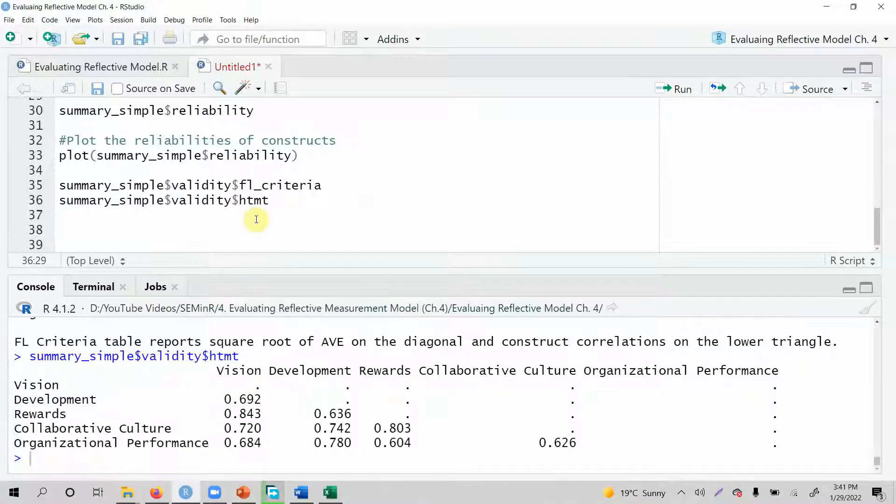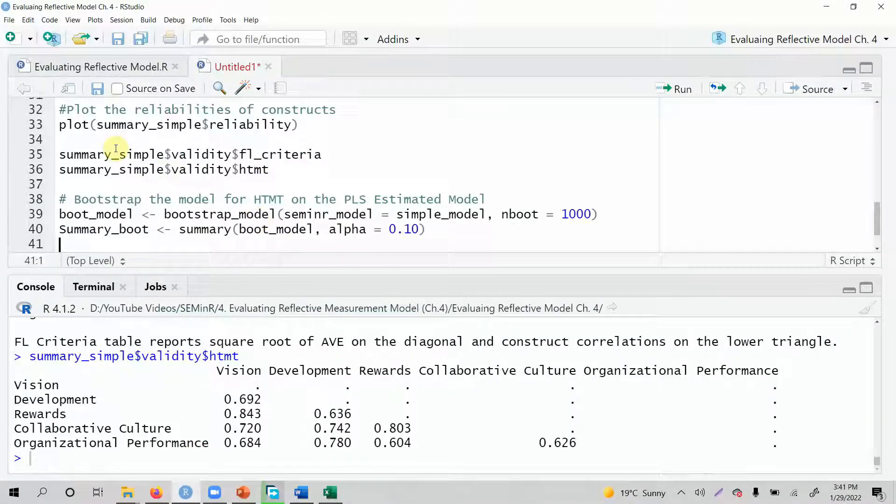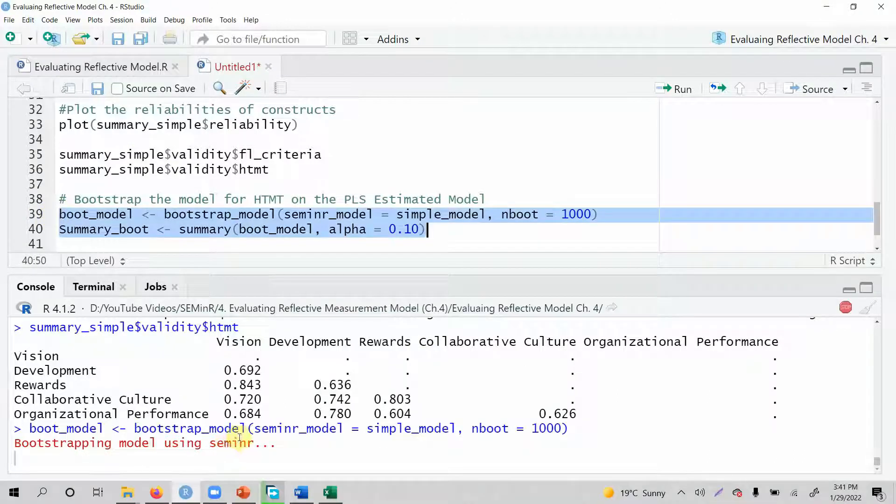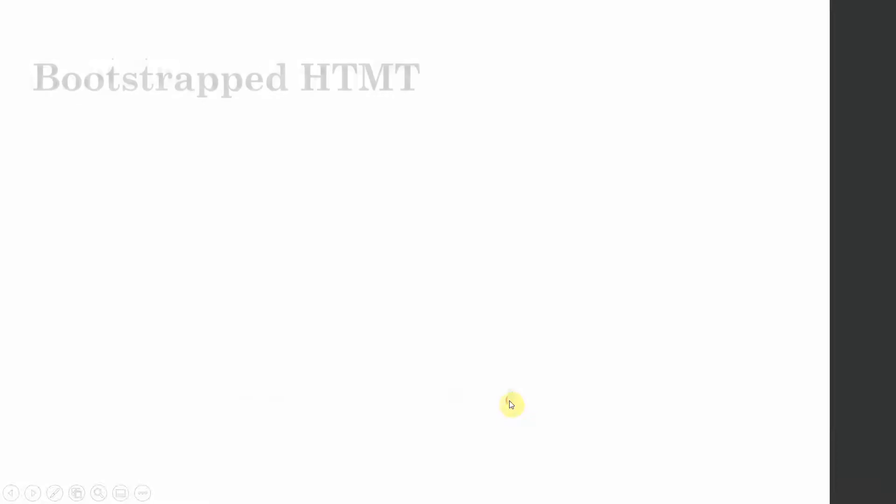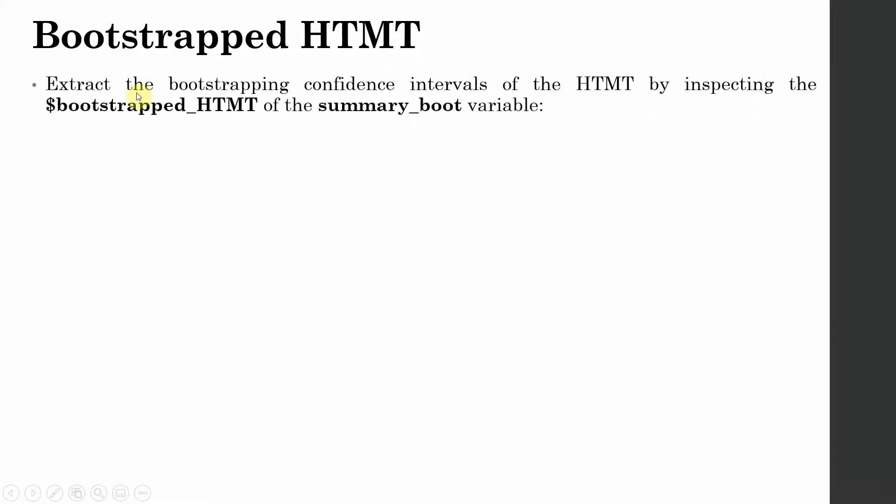Let's run it. Let's go there. Press enter. Press V. And now let's run it. Okay. So bootstrapping model using seminar, it may take some time. Your bootstrapping is complete. And you've got your results in this summary object. How do I retrieve the results? And how do we see the output?